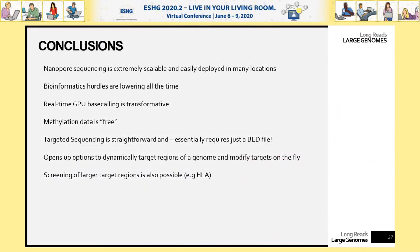To wrap up: nanopore sequencing is extremely scalable and easily deployable in many locations — as we're seeing right now during the COVID-19 outbreak. Bioinformatics is getting easier. Real-time GPU-based base calling is transformative, enabling these targeted sequencing approaches. You get methylation data for free. Targeted sequencing is relatively straightforward — it just requires a BED file. We can dynamically target regions of genomes, modify targets on the fly, and we've even shown targeted sequencing of regions like the HLA.